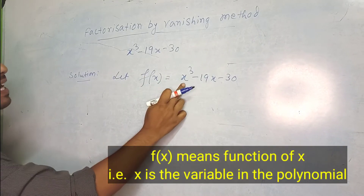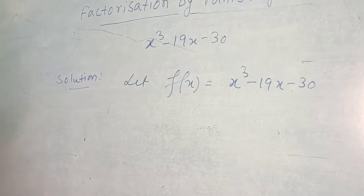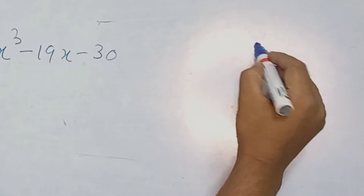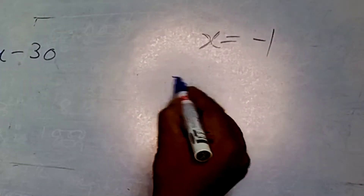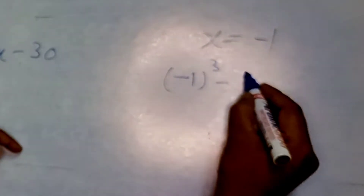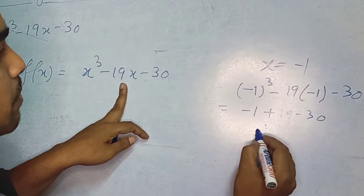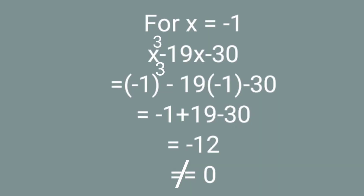So let us take the value of x haphazardly. Except 0, you can take 1, minus 1, 2, minus 2 and so on. I am taking x equal to minus 1. Putting minus 1 in place of x gives minus 1 plus 19 minus 30, which equals minus 12. It is not equal to 0, so our motive is to make it 0.